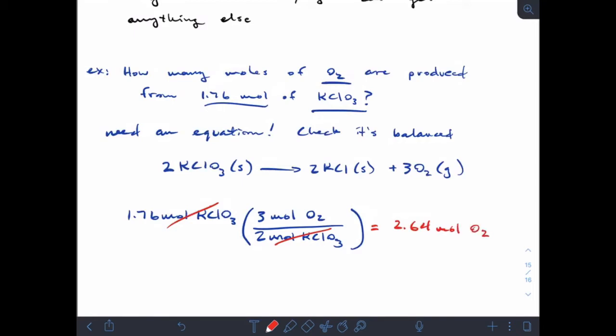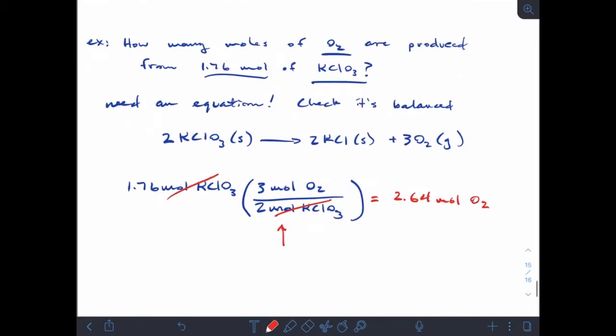Now before we get any farther, let's make sure that we understand how sig figs work with this type of problem. I want to make something clear that these are counting numbers. Right? 3 moles, 2 moles, they're counting numbers. And counting numbers have infinite sig figs. They're exact. So when we want to decide how many sig figs should be in our final answer, we're going to go with 3 from our initial information.